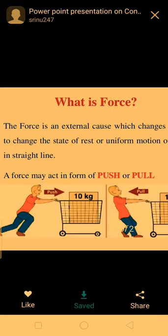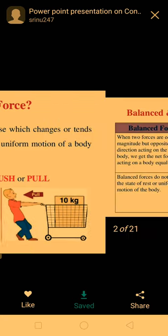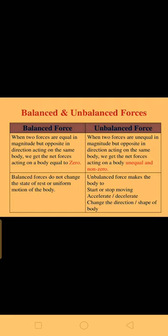There is a change in the position of the object or there is a change in the rest position of the object. Here the boy is pushing the cart in the first picture and in the second picture he is pulling the cart. So he is doing two activities: one is pulling and the other one is pushing. In our everyday life we use these two types of actions.